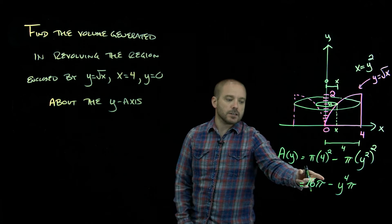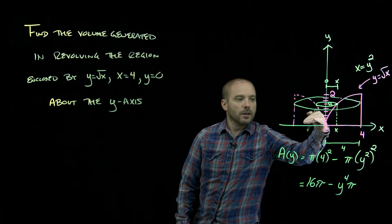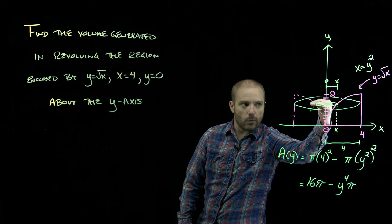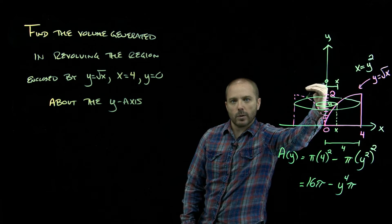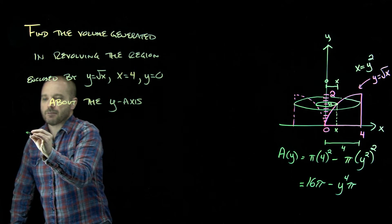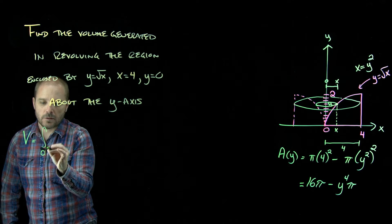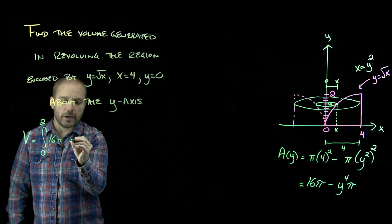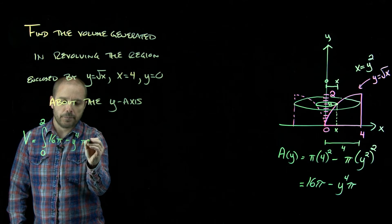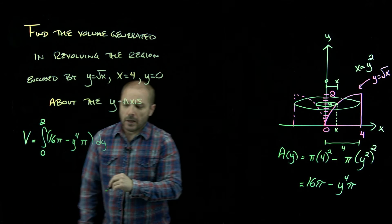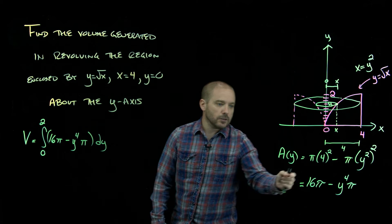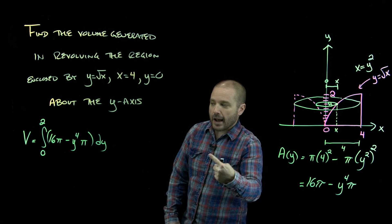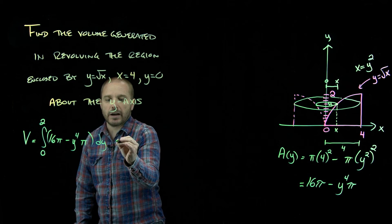Now that we've expressed the area of that cross-section, we just need to integrate it from zero to two. When thinking about your limits of integration, it's helpful to think about where you're slicing — you're slicing that region from zero up to two. So that volume is the integral from zero to two of 16π minus y⁴π dy. Even though we have a hole, it's still π·R² minus π·r² with two different radii, so we can factor that π out.